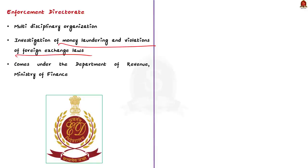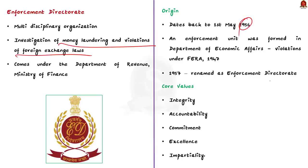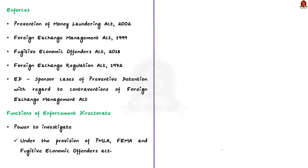The Enforcement Directorate is a multidisciplinary organization working on investigation of money laundering and violation of foreign exchange laws. ED comes under the Department of Revenue, Ministry of Finance. Its origin dates back to 1st May 1956, when an enforcement unit was formed in the Department of Economic Affairs for handling violations under the Foreign Exchange Regulation Act 1947. In 1957, this unit was renamed the Enforcement Directorate. The core values of ED include integrity, accountability, commitment, excellence, and impartiality. It is responsible for enforcement of four acts: Prevention of Money Laundering Act 2002, Foreign Exchange Management Act 1999, Fugitive Economic Offenders Act 2018, and Foreign Exchange Regulation Act 1972. ED is also empowered to sponsor cases of preventive detention with regard to contraventions of FEMA.